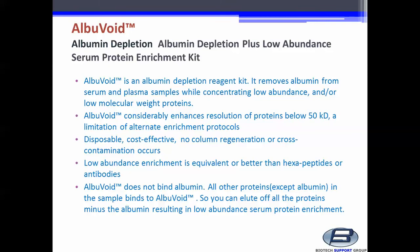Albuvoid does not bind albumin. All other proteins except albumin in the sample bind to Albuvoid, so you can elute off all the proteins minus the albumin, resulting in low abundance serum protein enrichment.